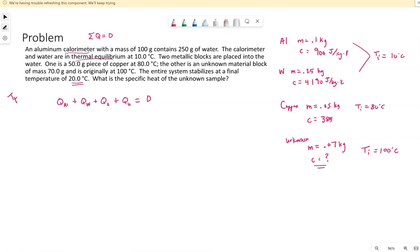Now the final temperature of the whole system is 20. Everything in this system is going to end up at the same temperature. Everything's going to go through a temperature change. Nothing is going through a phase change. So the only equation we need for each of these terms is the MC delta T.